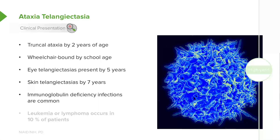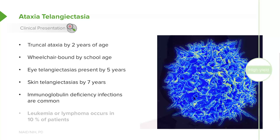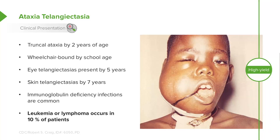These patients have immunoglobulin deficiency, and infections are common, especially sinopulmonary infections. They can also develop leukemia or lymphoma, which occurs in about 10% of patients. Because they cannot perform DNA repair, they are likely to develop cancer.